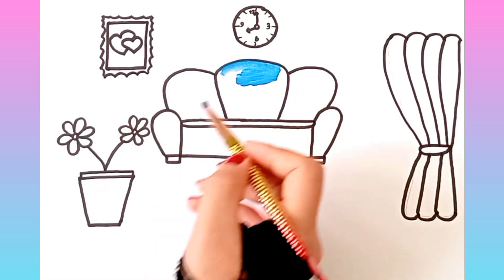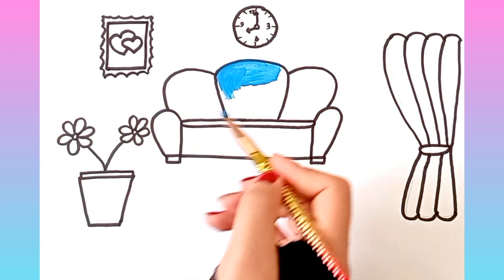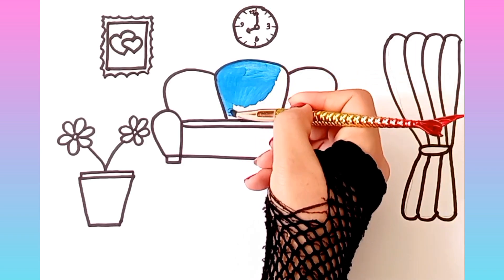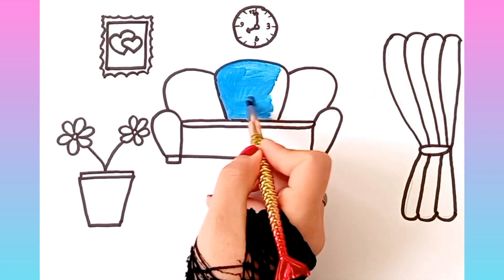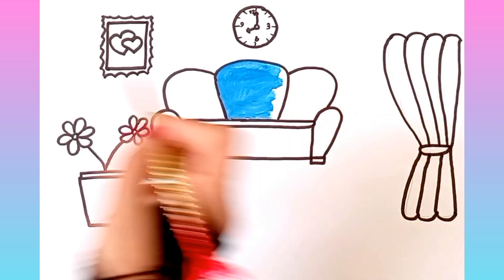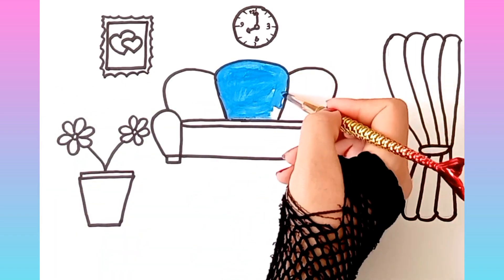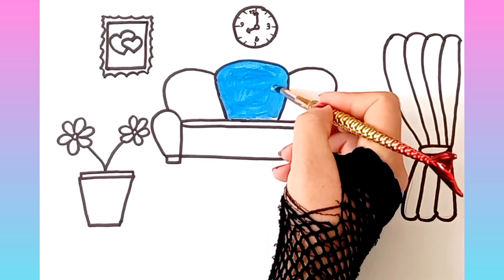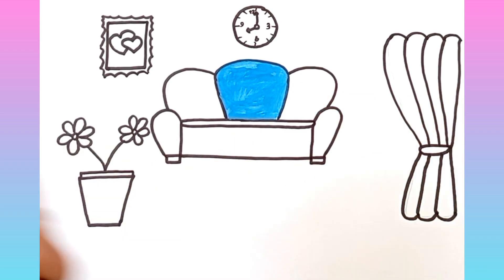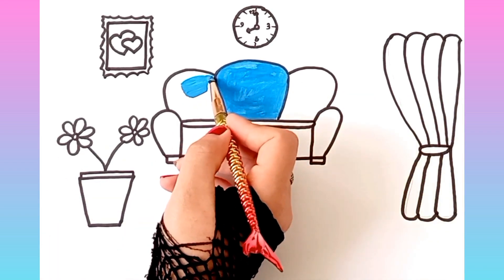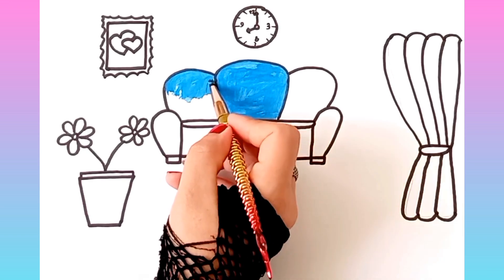W is for watch, w, w, watch. X is for xylophone, x, x, xylophone. Y is for yellow, y, y, yellow.